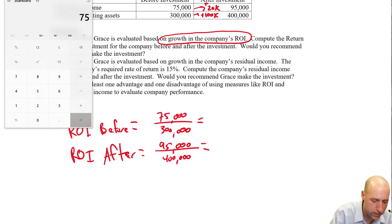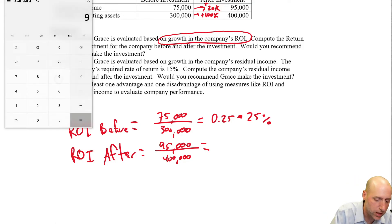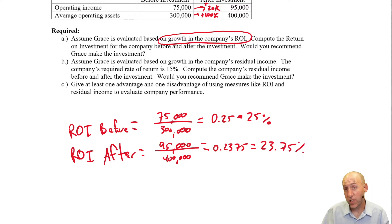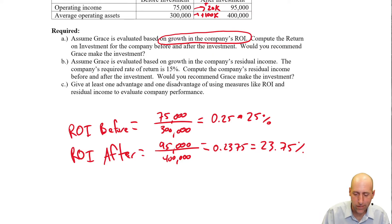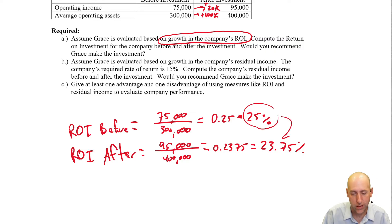$75,000 divided by $300,000 gives us 0.25, or 25% — that's her ROI before. If she takes this opportunity, $95,000 divided by $400,000 gives $0.2375, or 23.75%. So ROI goes from 25% to 23.75%. Should she do it? Based on ROI growth alone, probably not.